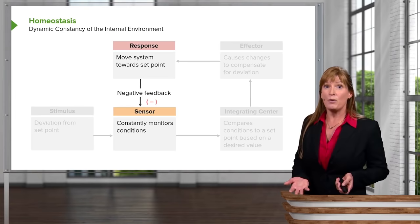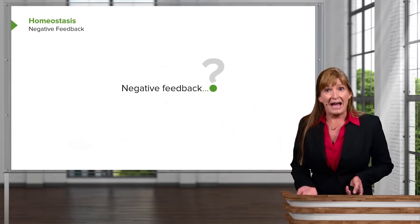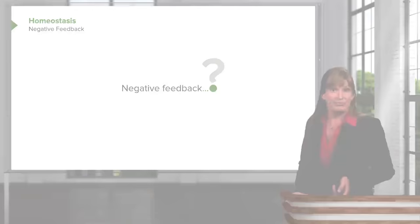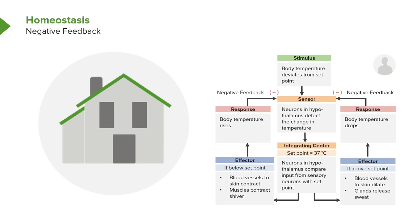There are two mechanisms for homeostasis. The predominant one in biological systems is the negative feedback loop. However, on occasion, we'll see a positive feedback loop. Negative feedback is what keeps most systems in biology in balance. Let's now move on from the house example into a body temperature example.